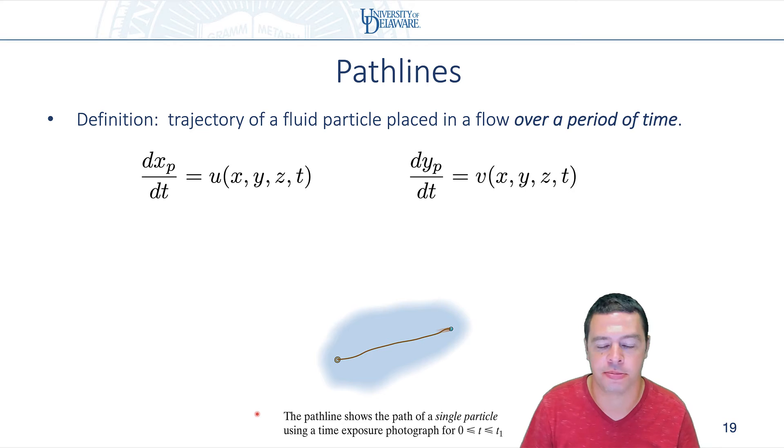Obviously the definition is that you just take the fluid velocity at any particular point using our Eulerian description. U is a function of coordinate X, Y, Z and time, and V is a function of X, Y, Z and time.